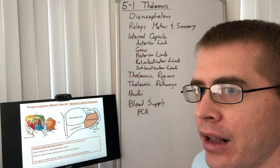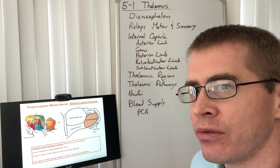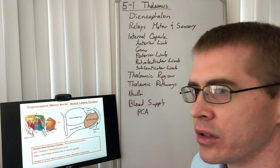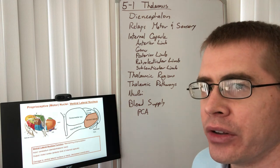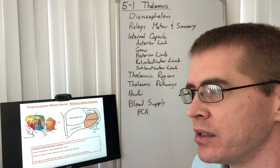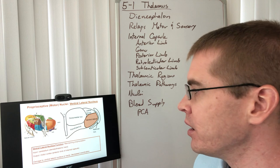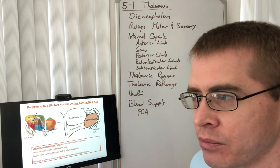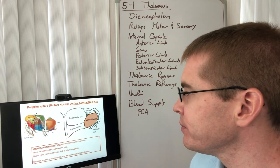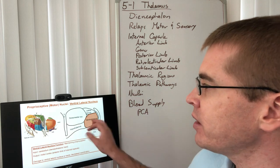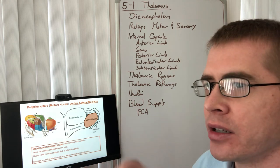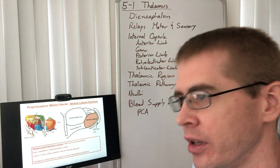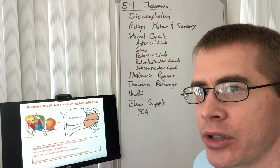The VL is very similar to the VA, but it's involved in the cerebellar pathway. This is related to maintaining coordination, posture, and balance. Just like the VA, the VL also travels to the motor cortex to then output through the corticospinal pathways.